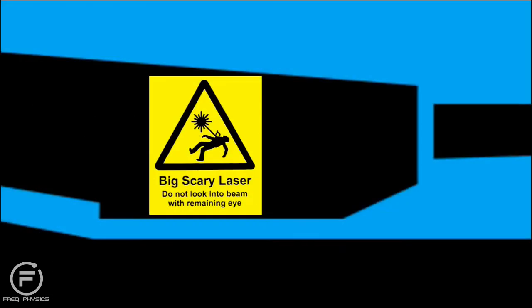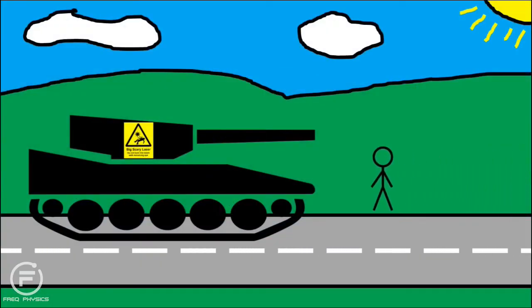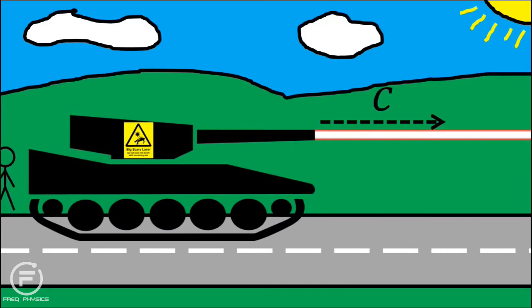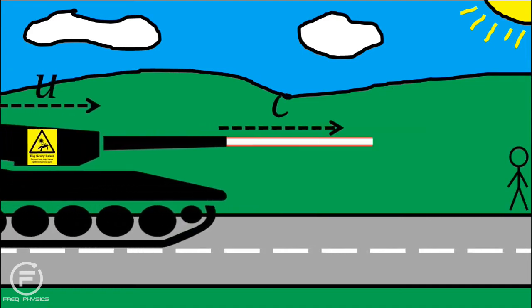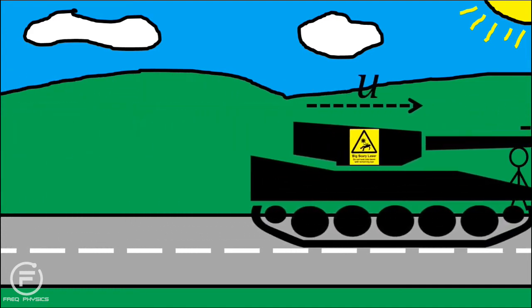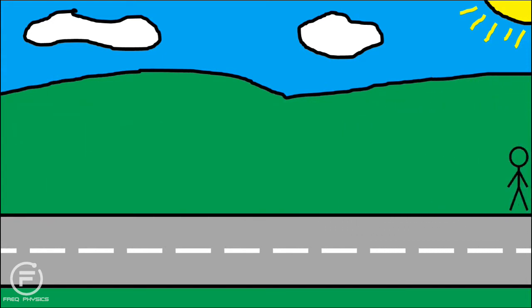Our tank's gun has now been upgraded to a big scary laser. Again, when the laser fires, the light travels at velocity C, the speed of light relative to the tank. However, from our observer on the ground, the speed observed is not U plus C, it is still just C. Think about that for a few seconds.